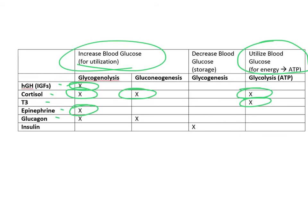Glucagon responds to a decrease in blood glucose, so it increases blood glucose by breaking down glycogen and synthesizing glucose from non-carbohydrate sources. The only hormone on the list that actually decreases blood glucose is insulin, which responds to an increase in glucose in the fed state, storing excess glucose in the form of glycogen.